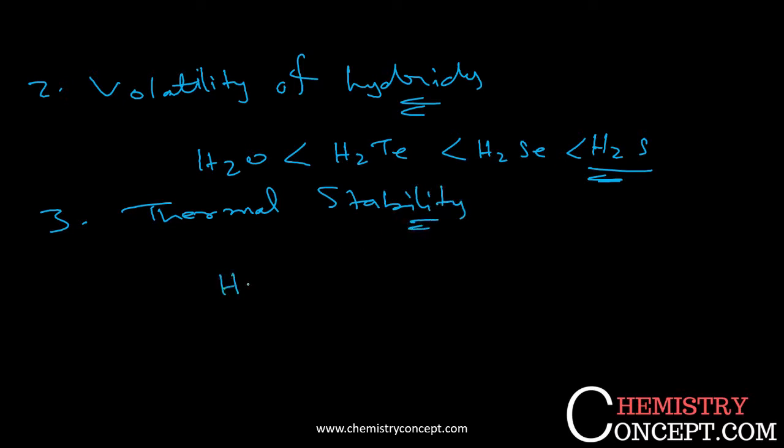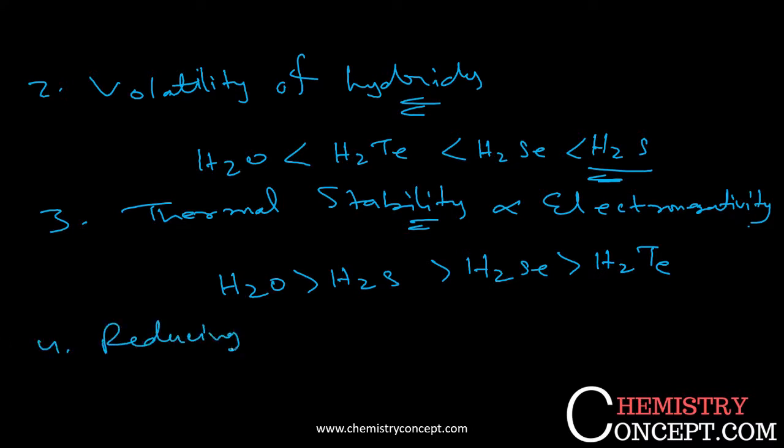Next is thermal stability. The thermal stability follows the trend: H2O is most stable, then H2S, then H2Se, then H2Te. The fourth property is the reducing nature of hydrides. H2O is the least reducing as compared to H2Se, then H2Te, because down the group, reducing nature increases in this oxygen family.